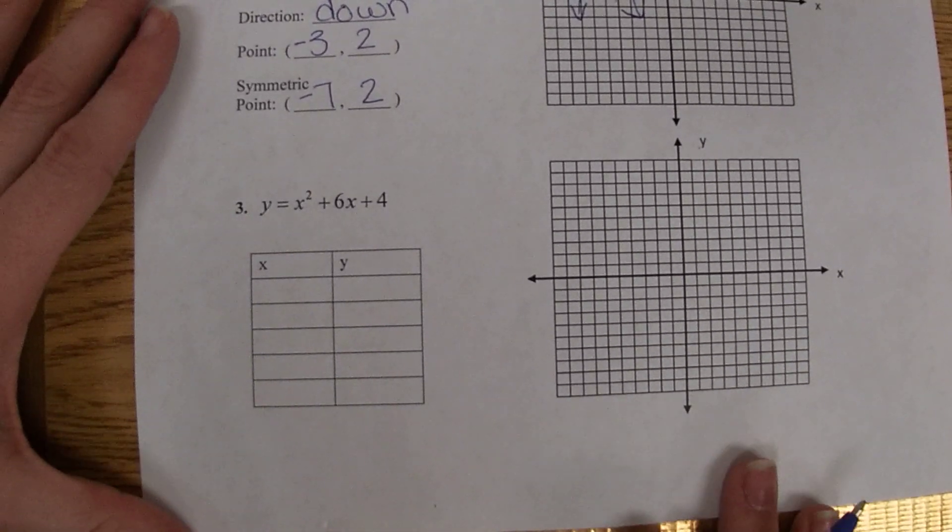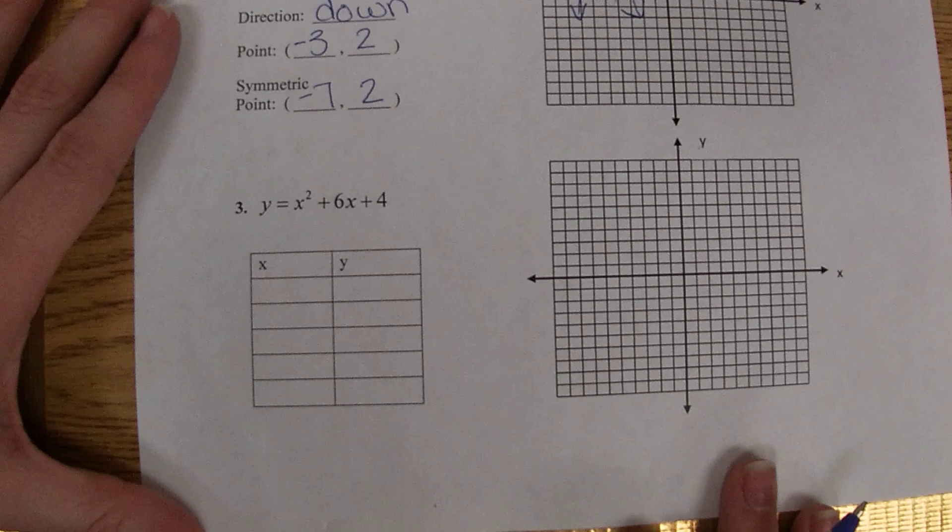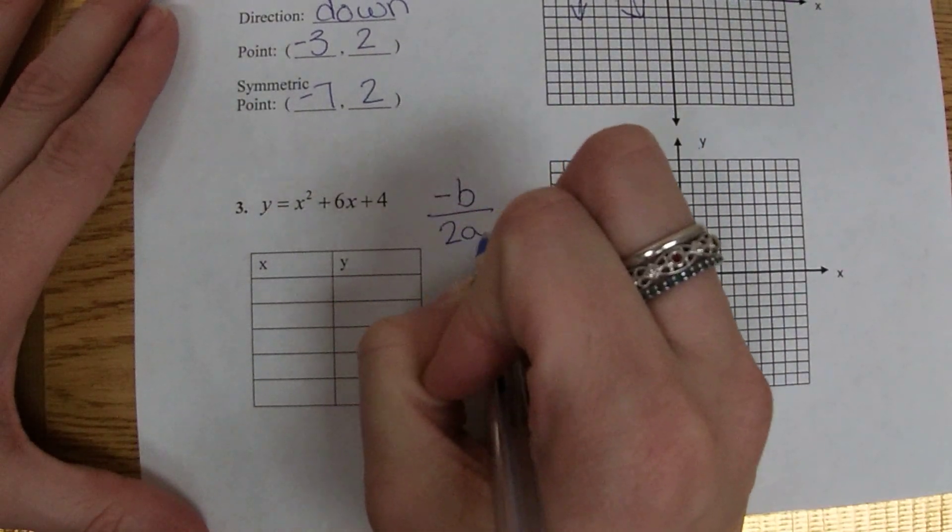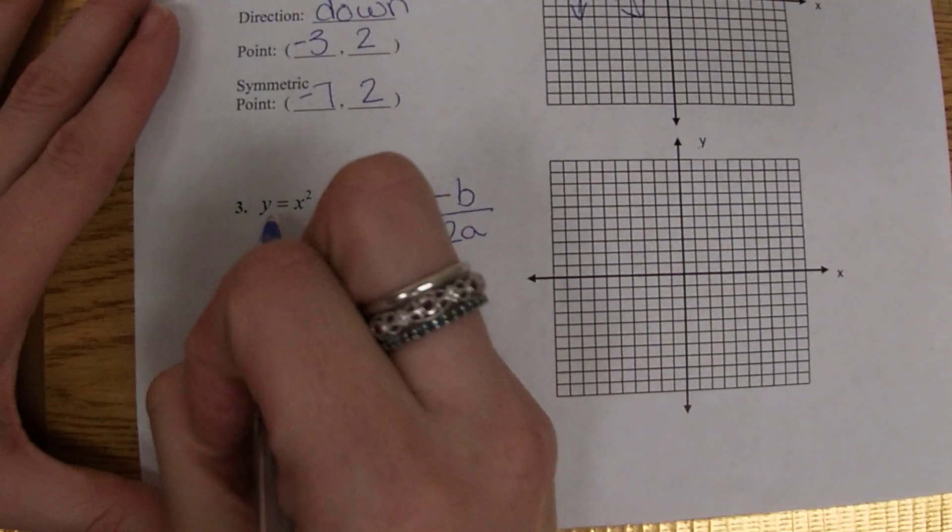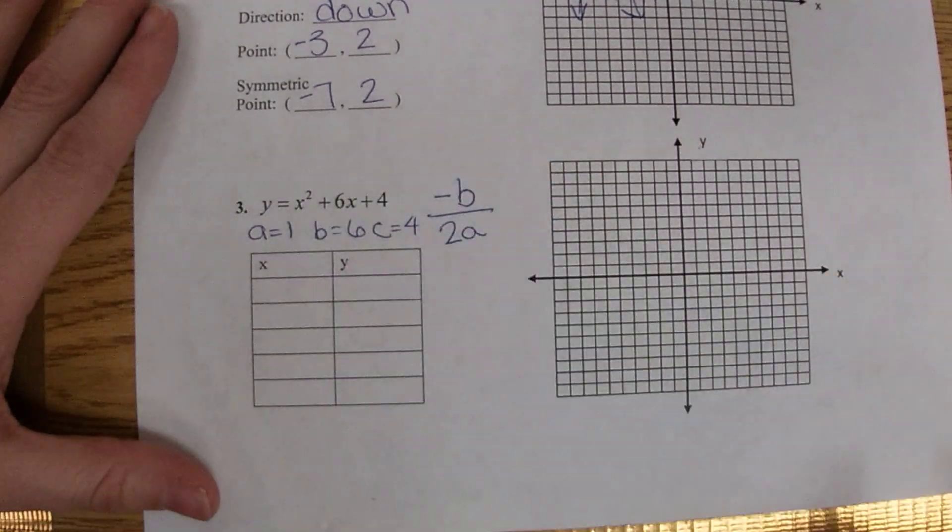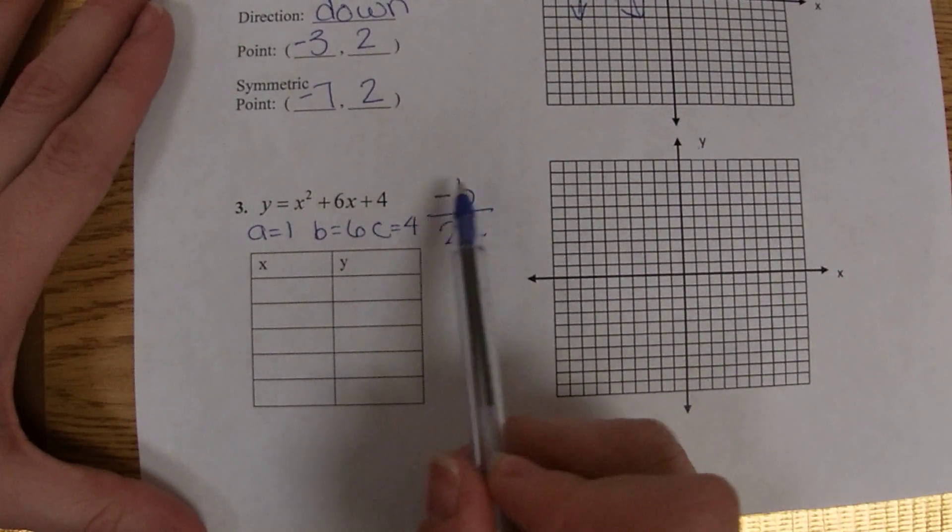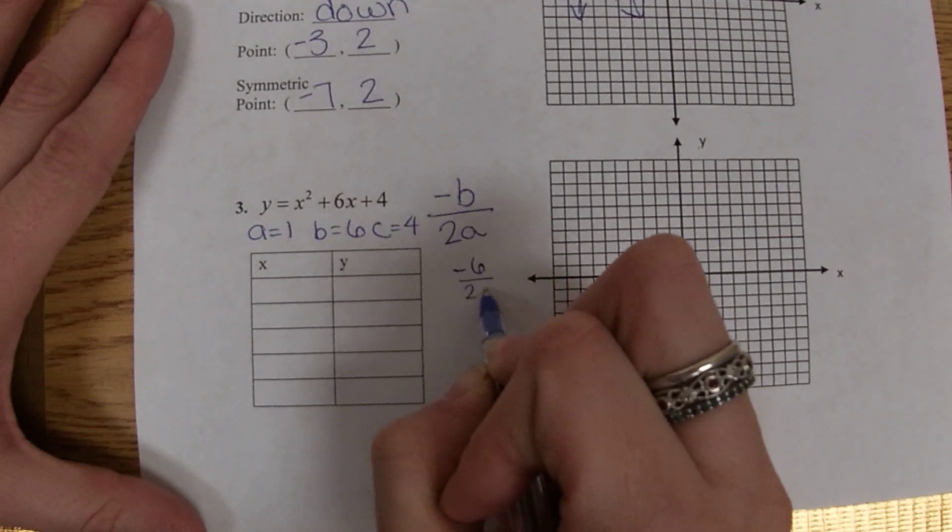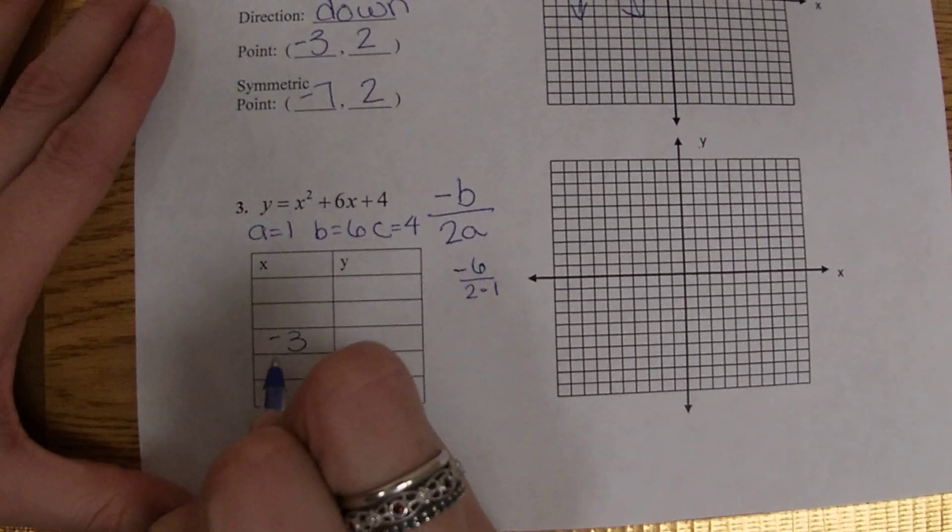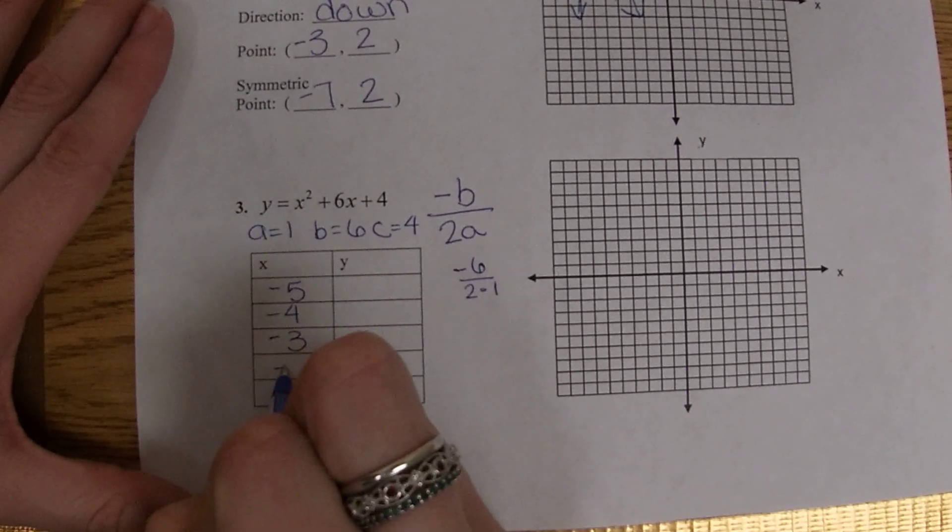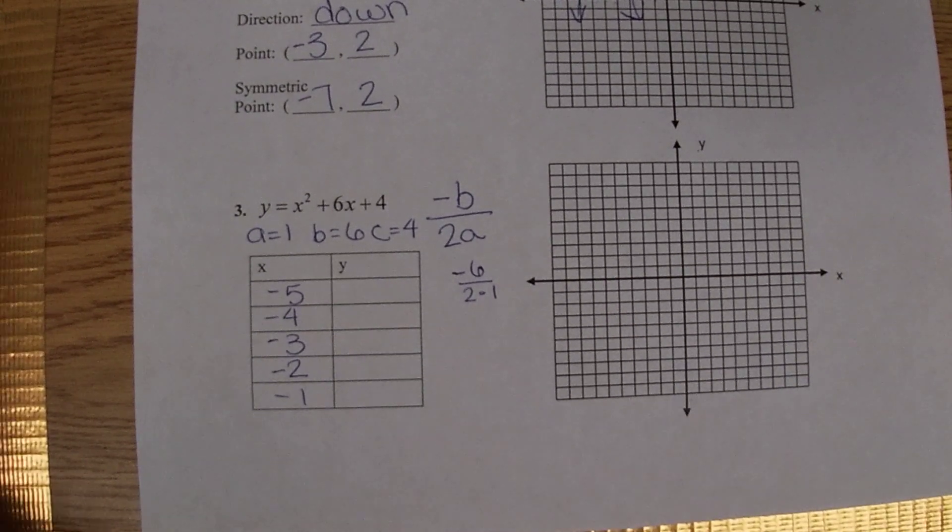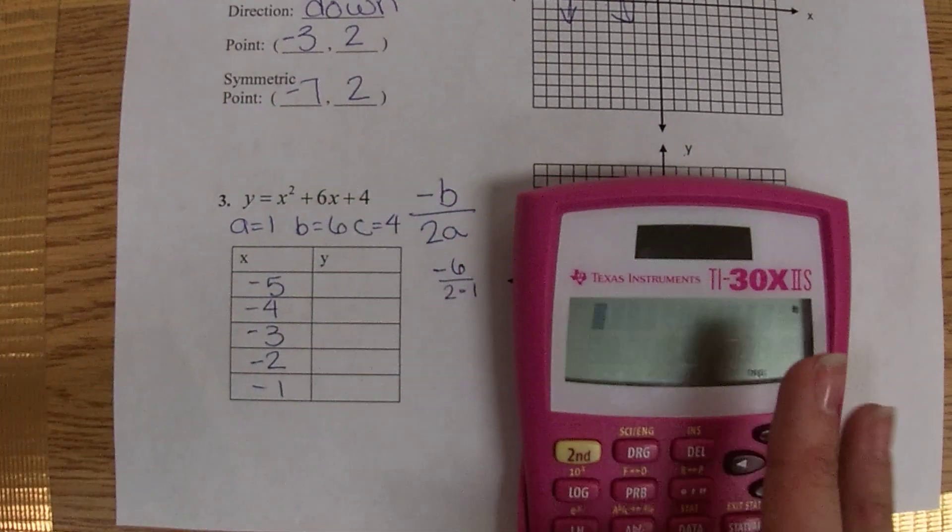Number three we have in standard form. Whenever we're going to graph in standard form, we need to start by finding negative b over 2a. So a equals one in this one, b equals six, c equals four. So if we're going to calculate negative b over 2a, we'd have negative six over two times one, so that gives us a negative three. And then we're just going to go out evenly spaced in each direction. Let's see, we'll start plugging them in.